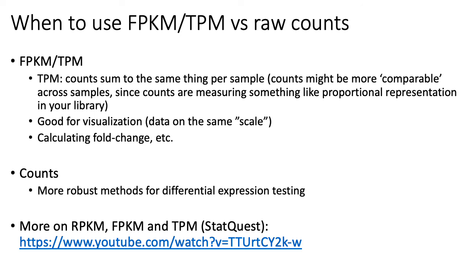Similarly, if your library size is really small, your estimate's probably very poor and you're not very confident about measurements from that sample. In this sense, the counts tell software something about the confidence it should have in expression measurements from those particular samples. At the bottom of the slide, I've included another link that goes into more detail about the differences between RPKM, FPKM, and TPM.